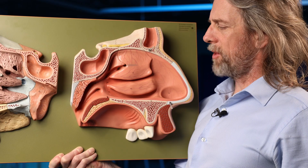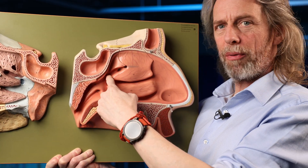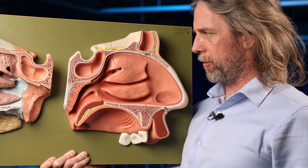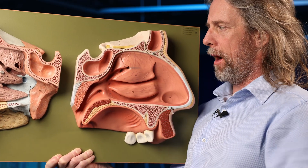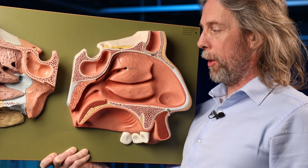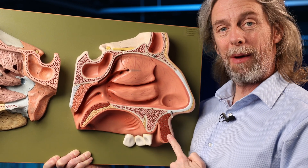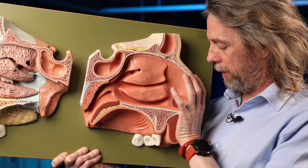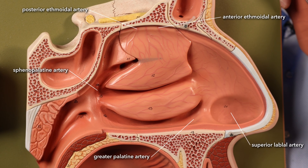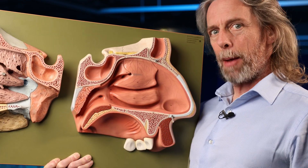Let's name the arteries. The maxillary artery of the deep face comes from the other side; one of its terminal branches is the sphenopalatine artery, which comes through and reaches this region. There are two ethmoidal arteries coming from the orbit, just lateral to this — anterior and posterior ethmoidal arteries. The greater palatine artery punches up through from the palate. And there's a superior labial artery that also comes up this way. So: sphenopalatine, anterior and posterior ethmoidal arteries, greater palatine artery, and superior labial artery — all sending branches into that septum.